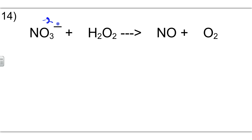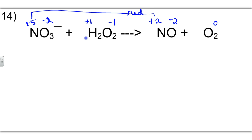Oxygen is negative 2. This is hydrogen peroxide, which is an exception. Hydrogen is going to be plus 1. 1 times 2 is a positive 2, so that makes this a negative 1, because negative 1 times 2 is negative 2. So now we find that our reduction occurs with the nitrogen, and our oxidation occurs from this oxygen to the neutral oxygen. This oxygen stayed negative 2 before and after, so we are concerned with the oxygens that changed. We're going to go with the negative 1 and the 0 in this scenario.